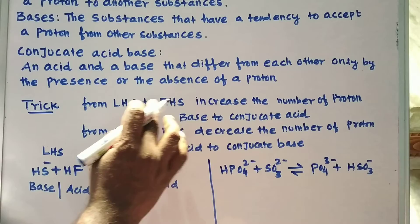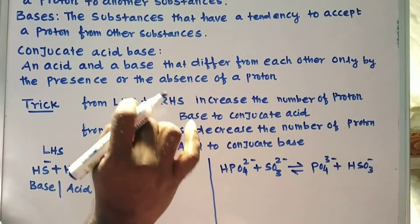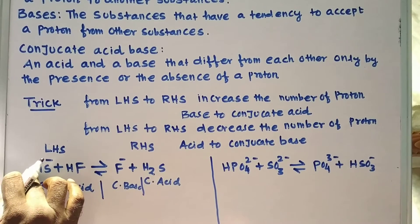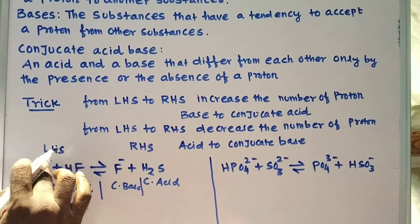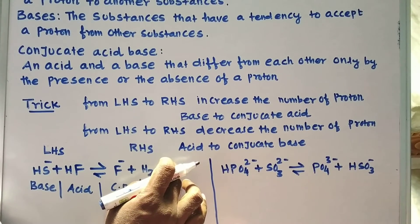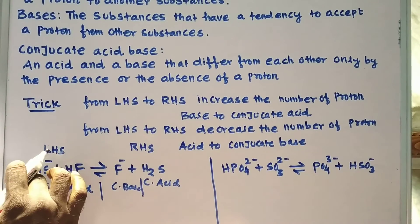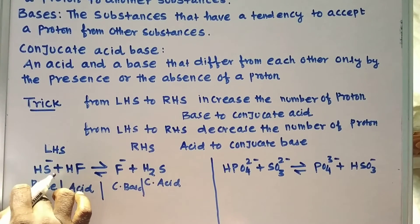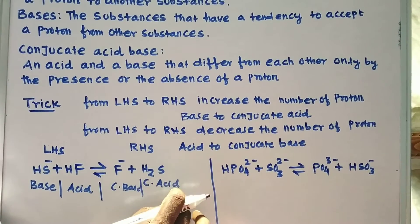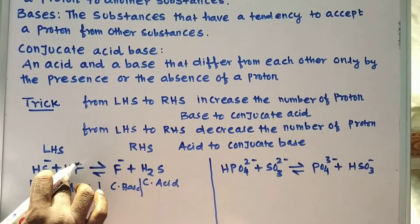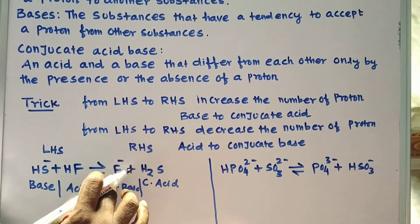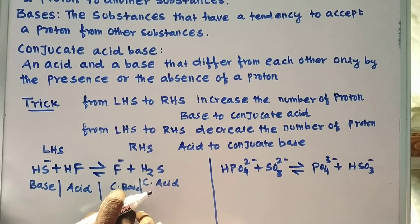From LHS to RHS, if there is an increase in the number of protons, it is base to conjugate acid. For example, HF contains one proton on the LHS; on the RHS it loses that proton and becomes F⁻. Therefore HF acts as an acid and F⁻ is the conjugate base. On the other side, the species that gains a proton acts as a base and forms the conjugate acid.